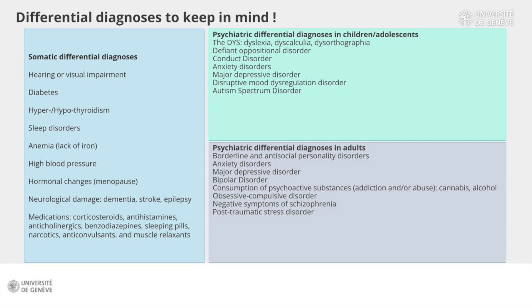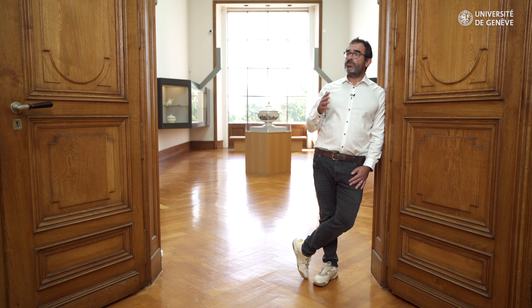Now, what about psychiatric differential diagnoses in children? There are plenty of differential diagnoses in children. The rebellious, disobedient, defiant side and irritability found in ADHD will also be present in oppositional defiant disorder. Children with this disorder often argue with adults and become angry easily. If such symptoms are at the forefront, it may be an oppositional defiant disorder, but also a depression or an anxiety disorder, which in children can also cause such symptoms.